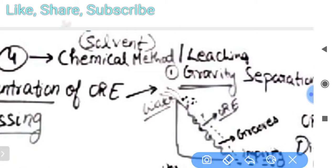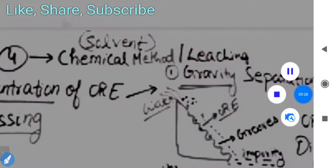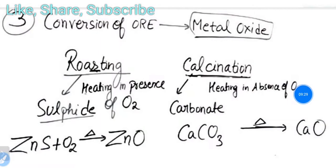One more concentration method is leaching. It is based on solvent nature — some ores mix with certain chemicals. This is the chemical method of concentration used for specific ores.